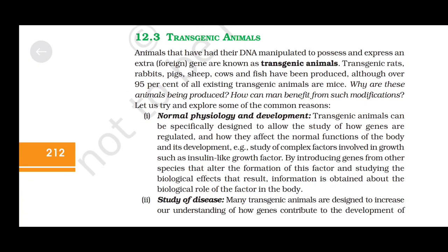Transgenic animals. Animals that have had their DNA manipulated to possess and express an extra or foreign gene are known as transgenic animals. Transgenic rats, rabbits, pigs, sheep, cows and fish have been produced, although over 95% of all existing transgenic animals are mice. Why are these animals being produced, and how can humans benefit from such modifications?